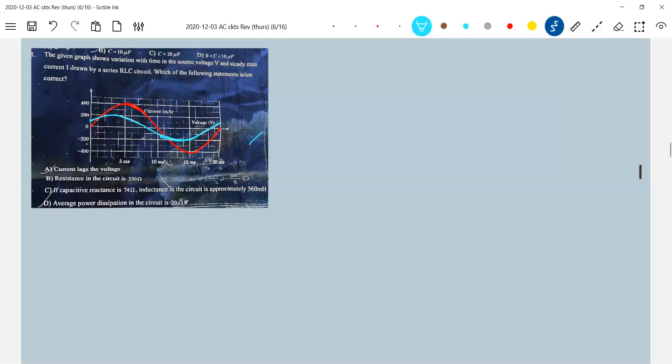Okay, now carefully look at this. So who is leading now? Red color is current, blue color is what? Voltage.